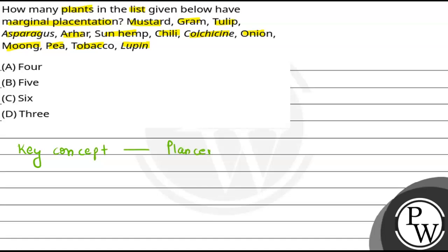So, if we talk about placentation, then placentation can be defined as the arrangement of ovules within the ovary.